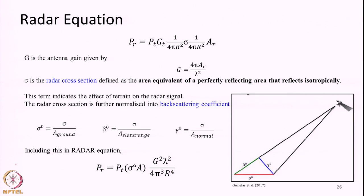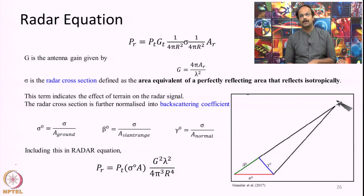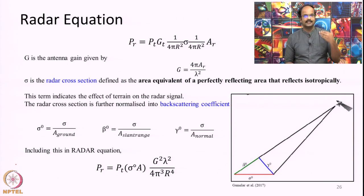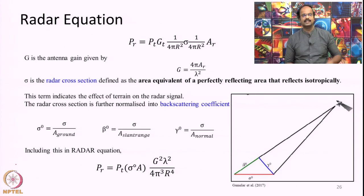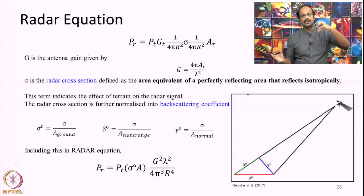First we will get introduced to what is known as the radar equation. We are not going to derive anything here, but we are going to understand what is actually contained in a radar image. When I introduced the concept of radar image I told you that it will collect the power that is being reflected back from the object. Here the term reflection means the signal which is reflected in the same direction as that of the receiver, because the radar has an antenna that transmits microwave radiation towards the object and whatever is reflected towards the antenna alone will be collected.